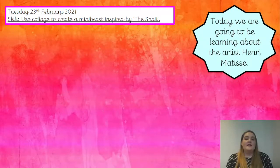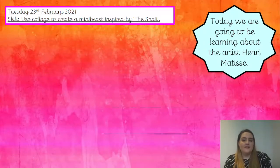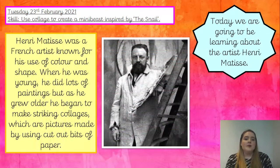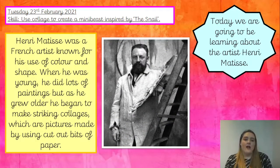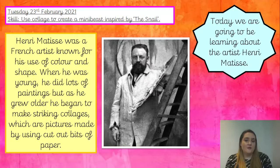Today we are going to be learning about the artist called Henri Matisse. Here he is — he was a French artist known for his use of colour and shape. When he was young, he did lots of paintings and we're going to look at some of his famous paintings today. But as he grew older, he began to make striking collages.